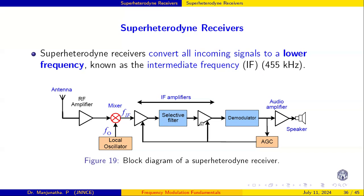After the mixer, we have an amplifier with filter — usually two to three stages of IF amplifier. Whatever frequency comes out is amplified and any unwanted frequencies are further removed. The output of the IF amplifier is given to the demodulator. The demodulator output is the original message signal, which is amplified and given to the speaker. Part of that output is taken back to a circuit called the automatic gain control (AGC).